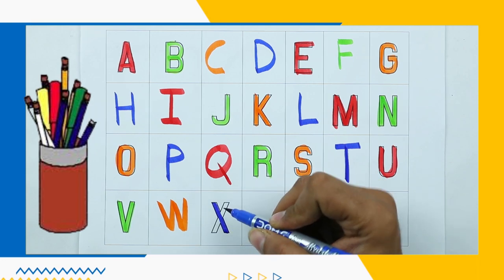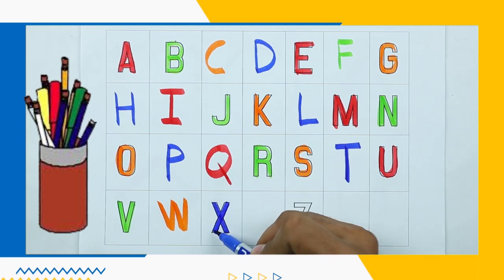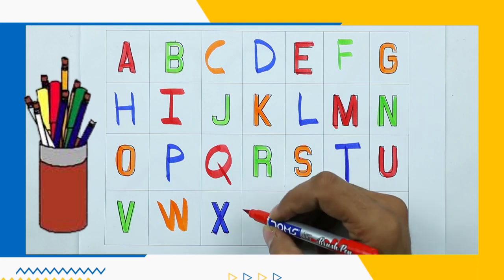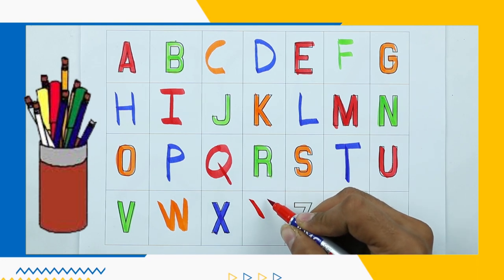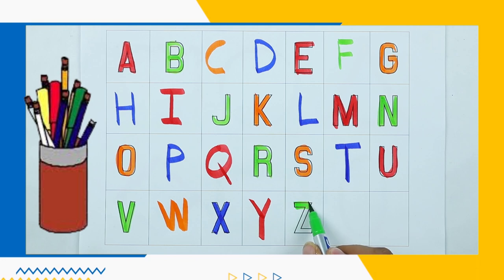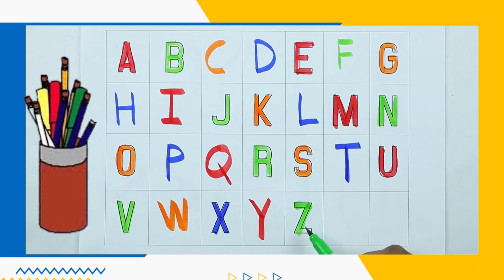X. X for xylophone. What next? Y. Y for yuck. Next is Z. Z for zebra. Z for zebra. Thank you for watching. Please like and subscribe. Bye bye kids.